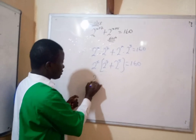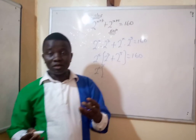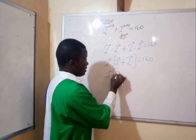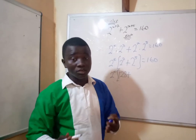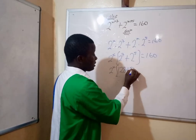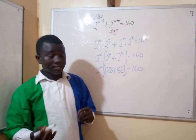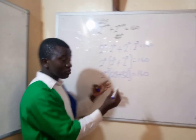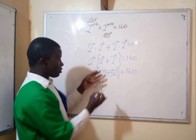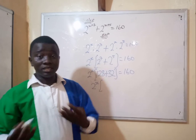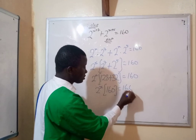Now, 2 to the power 7 equals 128, and 2 to the power 5 equals 32. So inside the bracket we have 128 plus 32, which equals 160. Therefore we have 2 to the power x multiplied by 160, equals 160.